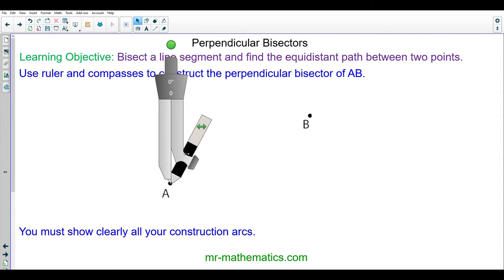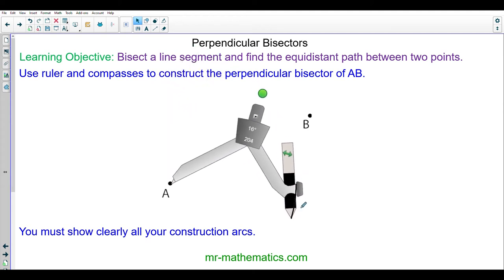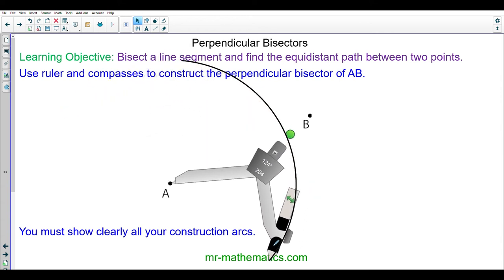Okay if you can remember we're going to create an arc where the radius is greater than half the length of the line AB so we'll open up our compasses and we'll draw an arc above and below.